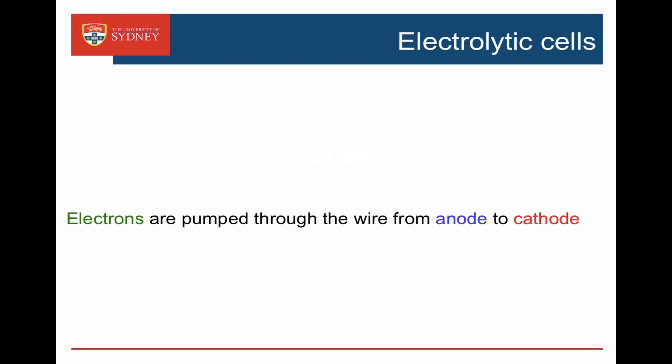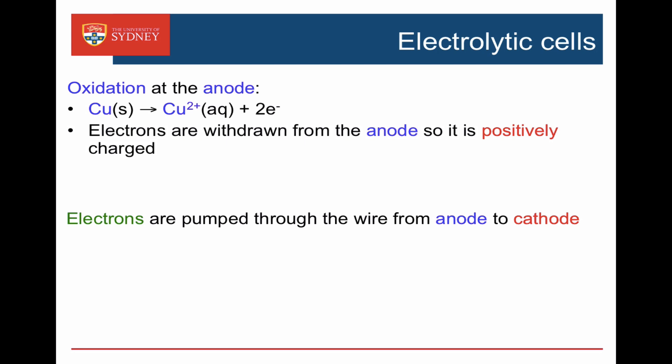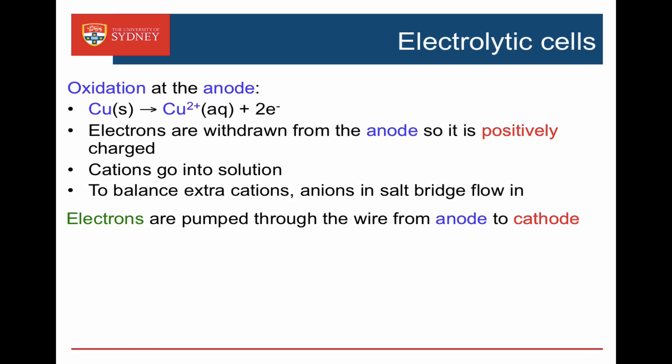In the electrolytic cell, we provide power to pump electrons through the wire from the anode to the cathode. Oxidation still occurs at the anode, but now it's the copper metal being oxidized to copper 2+ and two electrons. The power draws those electrons from the anode, so the anode becomes positively charged. Copper ions go into solution, and in order to balance those extra cations, anions in the salt bridge flow in.